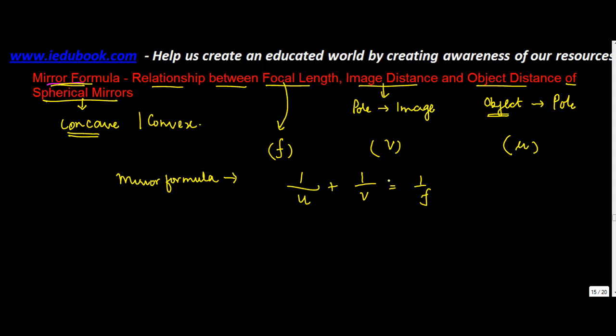So the mirror formula says that 1 upon U which is the reciprocal of the object distance plus the reciprocal of the image distance is equal to the focal length.